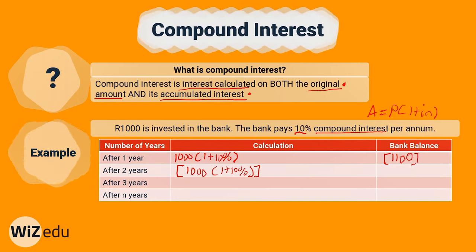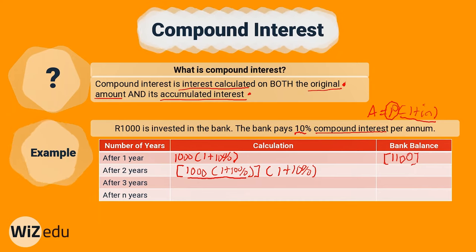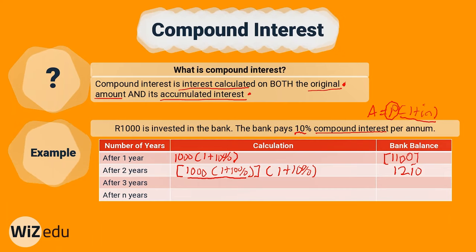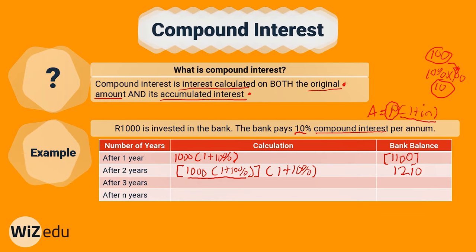So our original amount for year two includes the 100 rand we earned in year one, meaning we also earn interest on that 100 rand. So in year two, our P is 1000 into one plus 10%, and we multiply that by one plus 10% again. That brings our bank balance to 1210 rand for year two, which is 10 rand more than with simple interest — because we earned 10% on that 100 rand interest from year one.